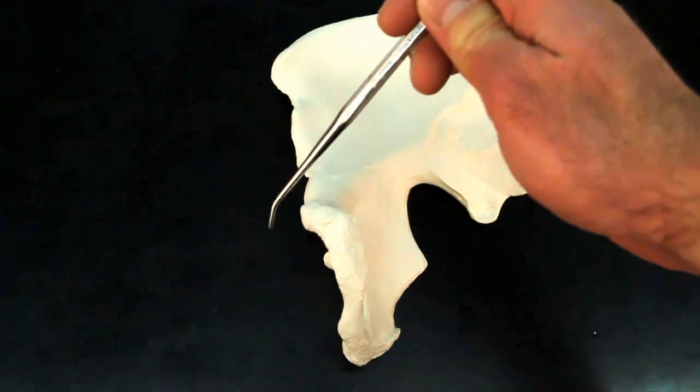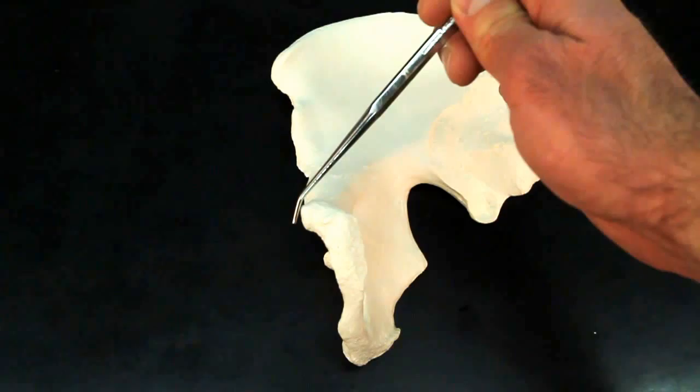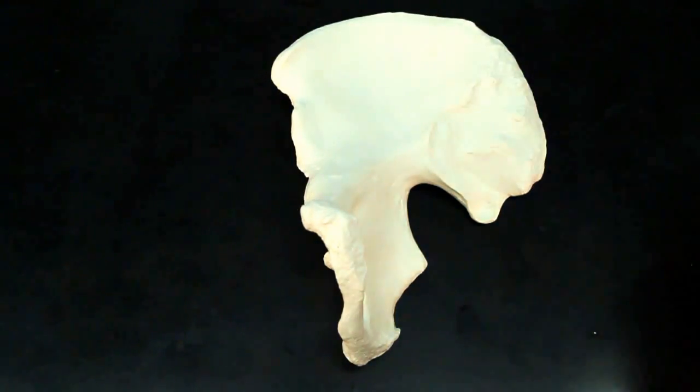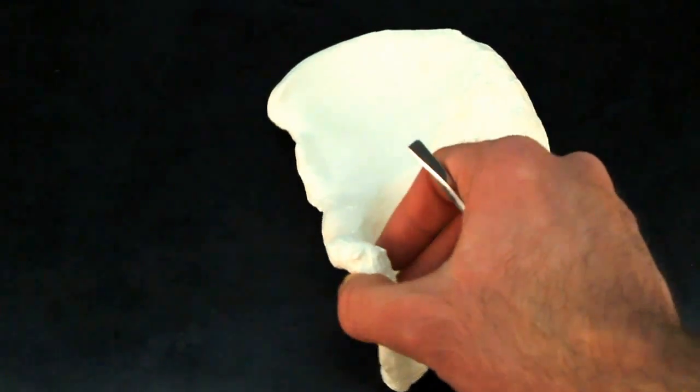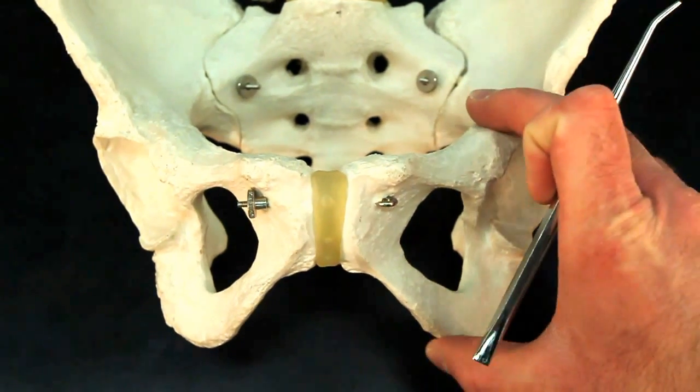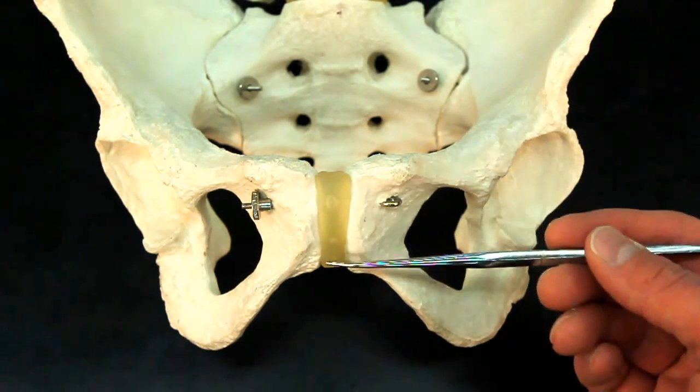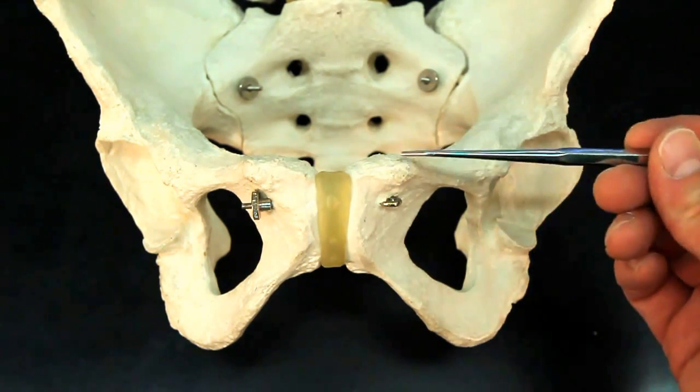This bump coming off here is going to be the pubic tubercle. Now when you put two of these bones together, you end up getting an entire pelvis. In this pelvis, you can see this is the pubic symphysis. These are the pubic tubercles.